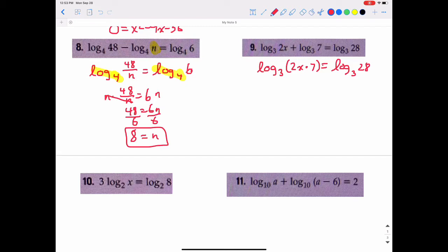Well, 2x times 7 is 14x. So 14x equals 28 divided by 14, and x equals 2. That does make sense because we can take the log of 2. If I look in the original problem, we can take the log of 2 times 2, and so that does make sense. It is a real solution.